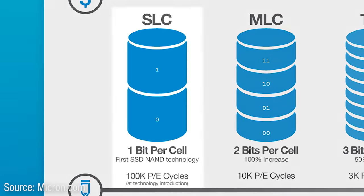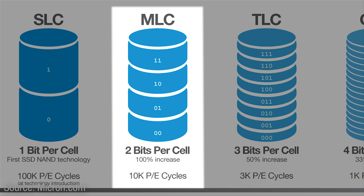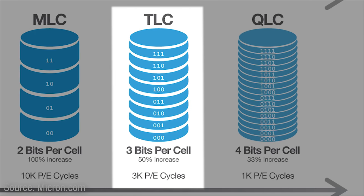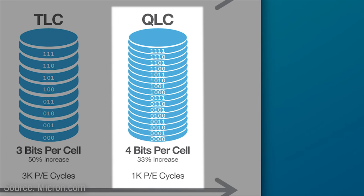SLC by far has the most write cycle durability, at between 50,000 to 100,000 write cycles per cell. MLC drops down quite a bit to only 3,000 to 10,000 per cell, although with 3D NAND it can be up to about 35,000. TLC drops even further to between 300 to 1,000 cycles, or 1,500 to 3,000 with 3D NAND. QLC basically only uses 3D NAND, and even then it's only 150 to up to 1,000 write cycles per cell.